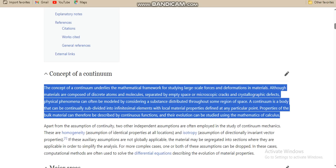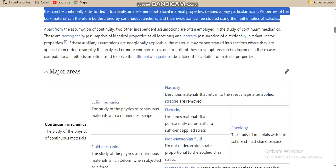Physical phenomena can often be modeled by considering a substance distributed throughout some region. A continuum is a body that can be continually subdivided into infinitesimal elements where local material properties are defined at particular major areas.